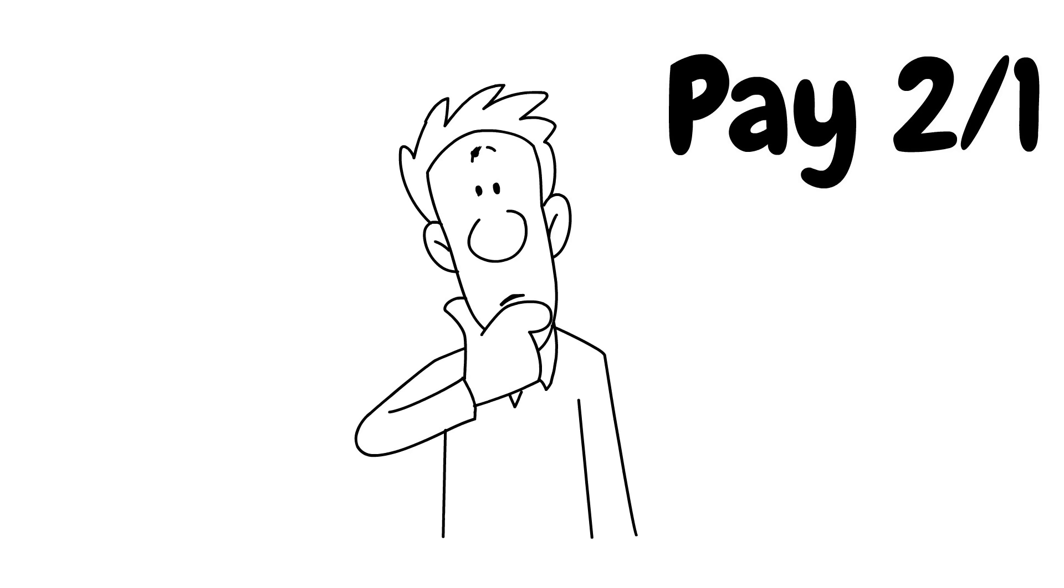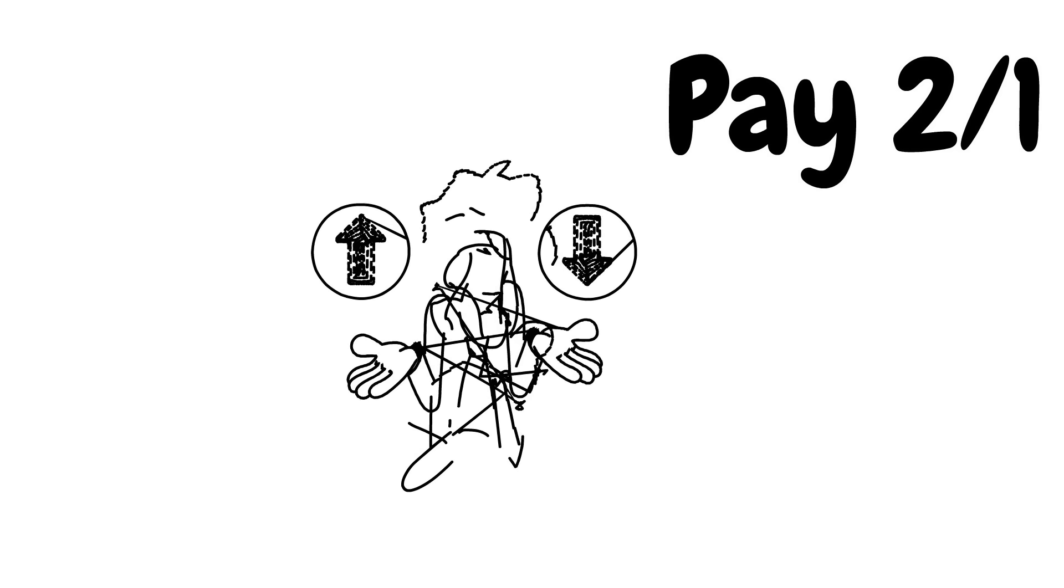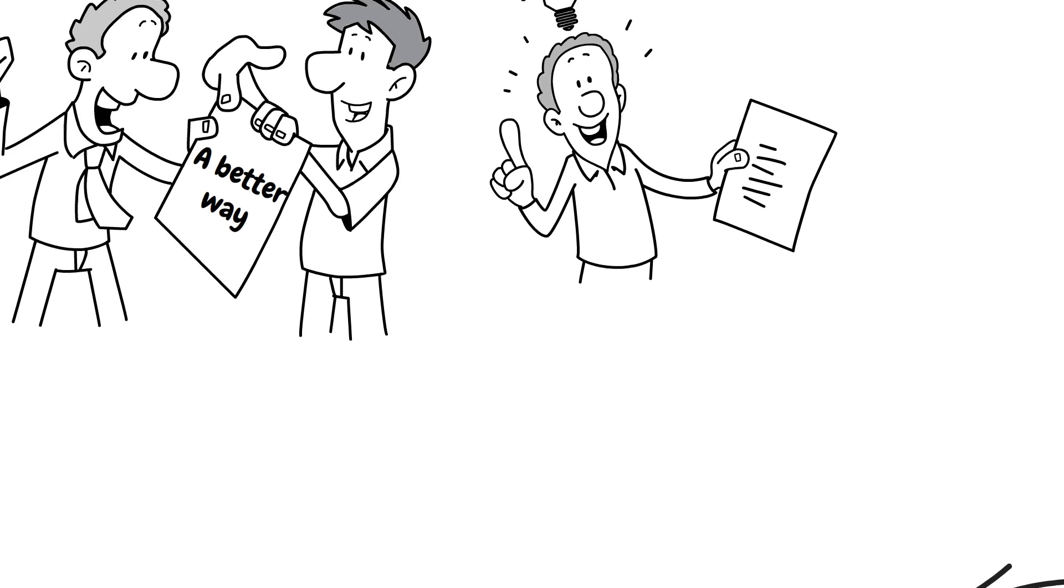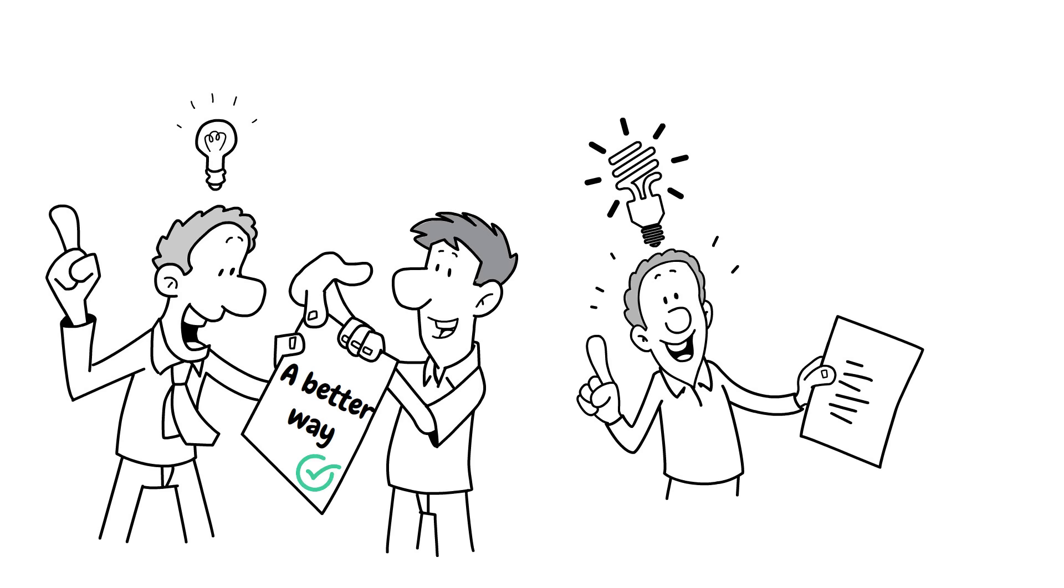But interestingly, we don't need a payout of 2 to 1 for our Fibonacci sequence to be profitable. I'm proposing that we can reduce our profits in exchange for a higher probability of winning. And that would be the most optimal way of playing the Fibonacci sequence on roulette.